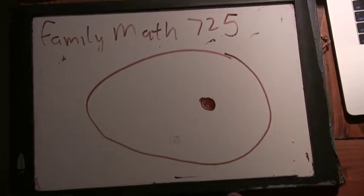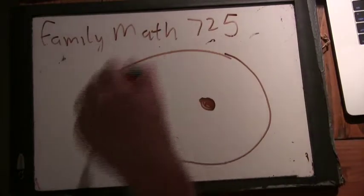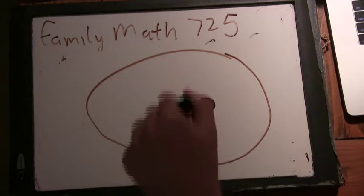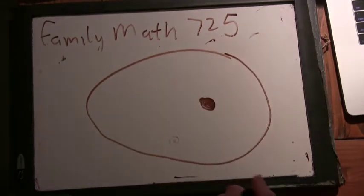When we watched that movie, Hidden Figures, they were trying to do some calculations about ellipses. Satellites, there's space vehicles orbiting the Earth and then trying to come back into the Earth.